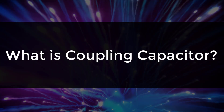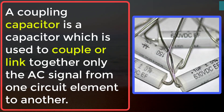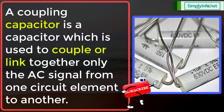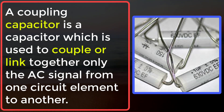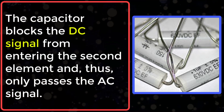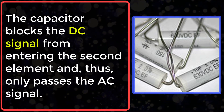What is a coupling capacitor? A coupling capacitor is a capacitor used to couple or link together only the AC signal from one circuit element to another. The capacitor blocks the DC signal from entering the second element and thus only passes the AC signal.